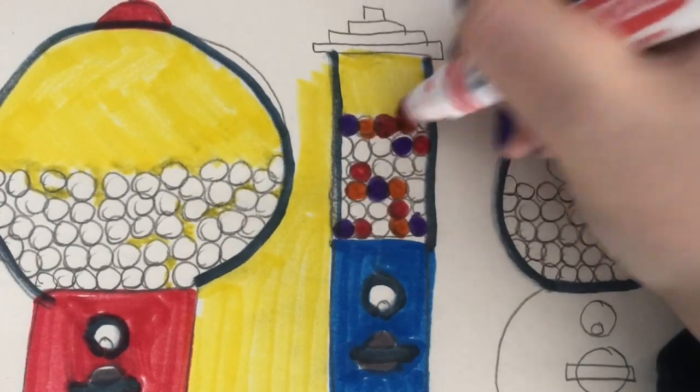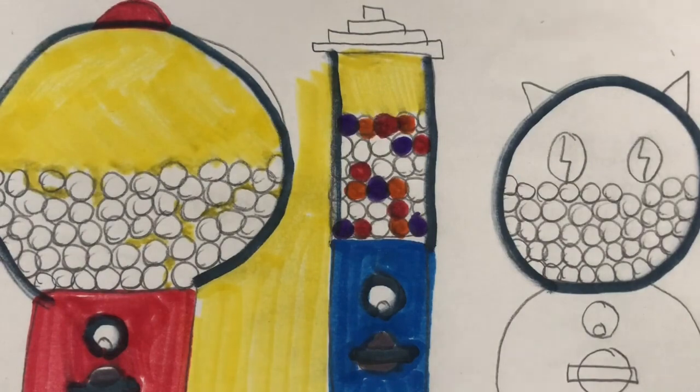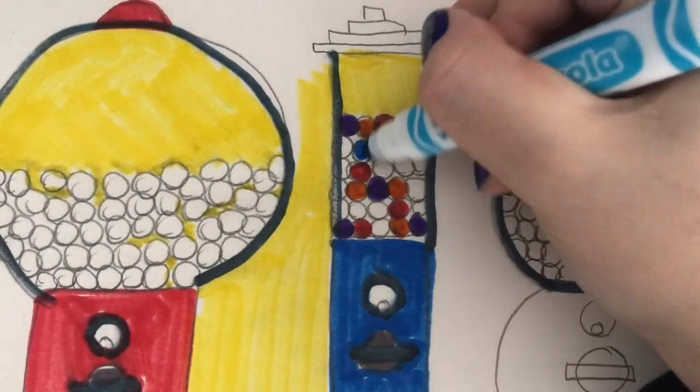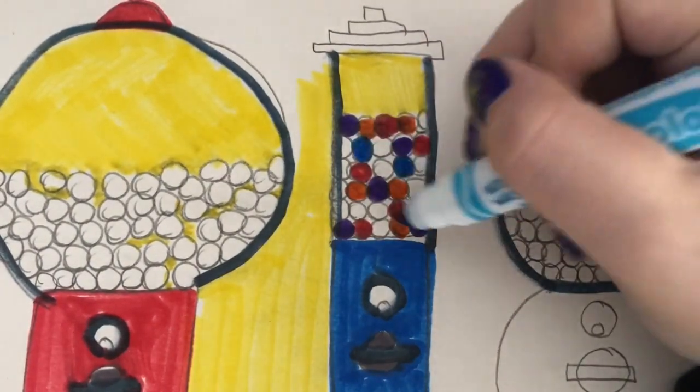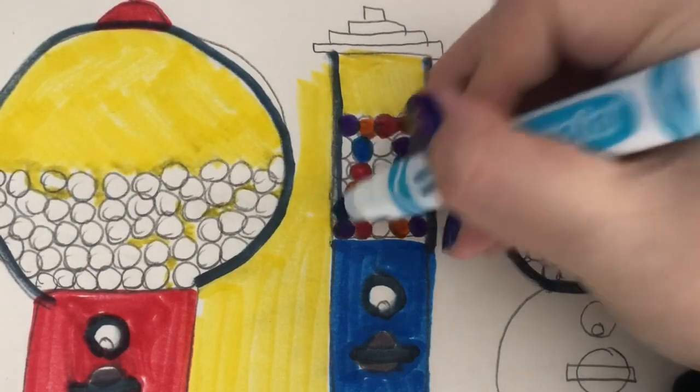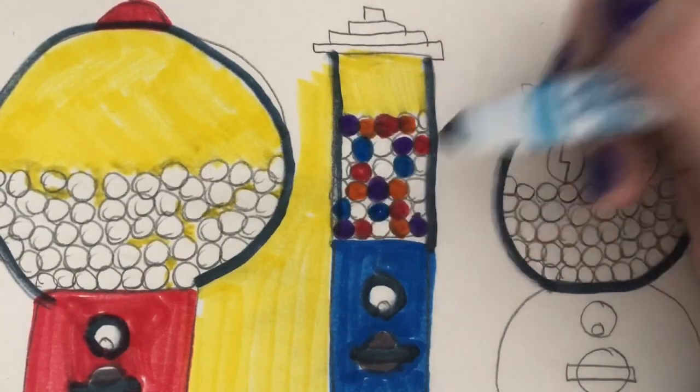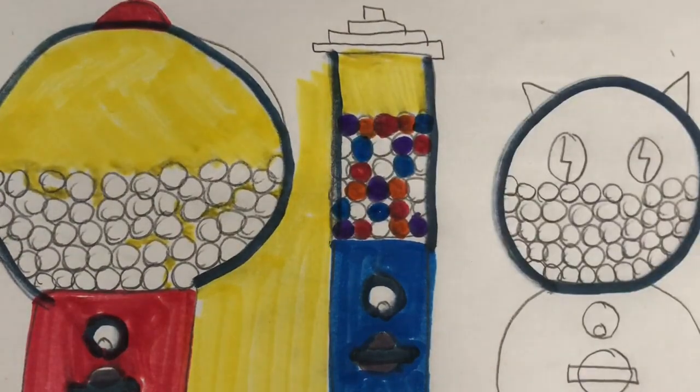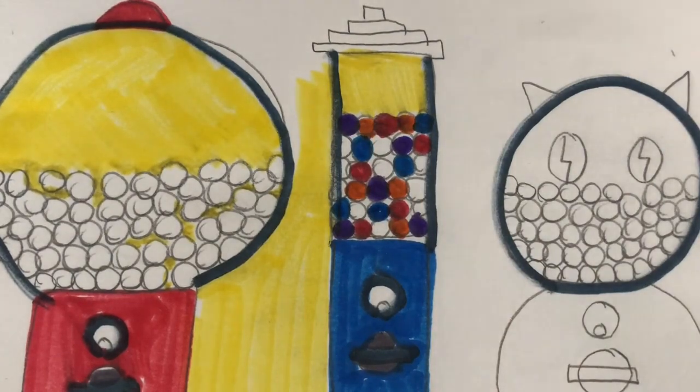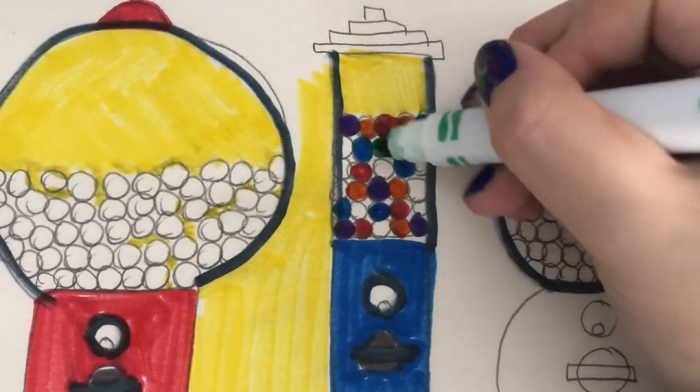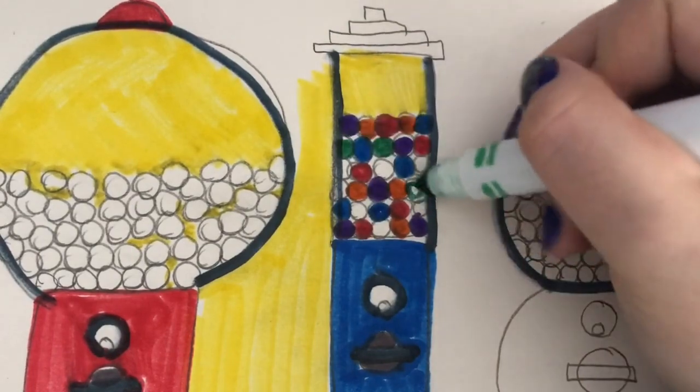Because I want to see that all the gumballs have different colors to them. Now, I am really excited to see this because gumballs are so colorful. And I think that it's so nice when I get to see all of these beautiful colors, you know, all kind of near each other. I think that's my favorite part about a gumball machine is that it's so colorful to look at, right?